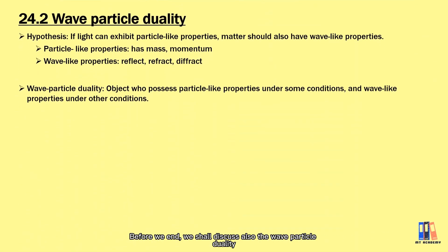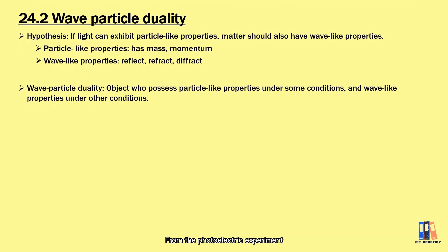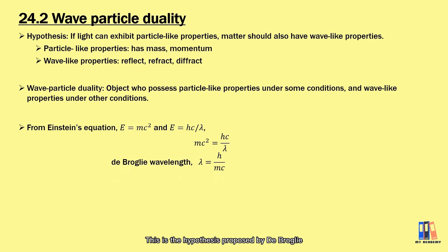Before we end, we shall discuss also the wave particle duality. From the photoelectric experiment, we have seen that light which is a wave exhibits particle properties. According to de Broglie, the hypothesis that matter should have also wave-like properties which is the other way around. So we have learned about the particle which has mass, momentum, etc., while the phenomena of wave which include reflection, refraction and diffraction. De Broglie introduced the wave particle duality which states that both objects possess both particle and wave-like properties under some conditions. We can quickly obtain the formula of de Broglie wavelength lambda equals h over mc where mc is also the momentum. So this is the hypothesis proposed by de Broglie.